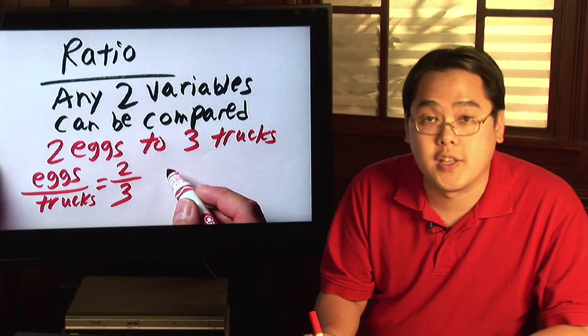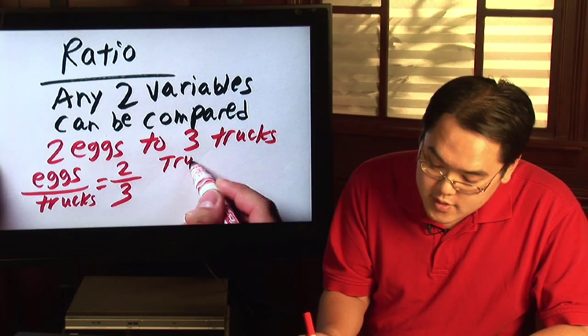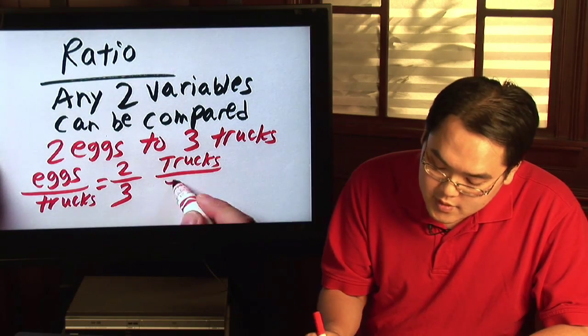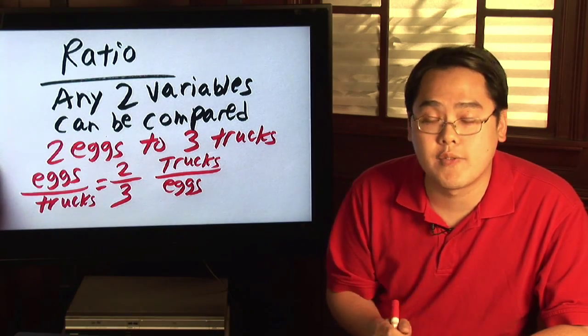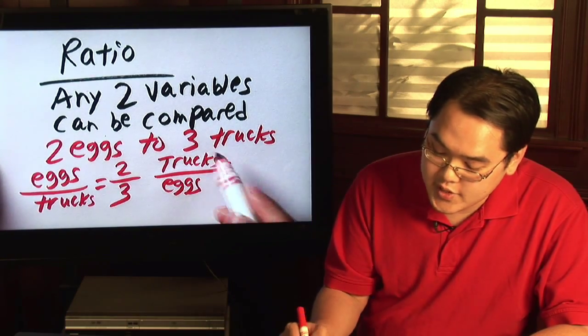Now on the other hand, if you decide to do it the other way around, compare trucks to eggs, plug in the same numbers but the order would be slightly reversed. So trucks has three, eggs has two.